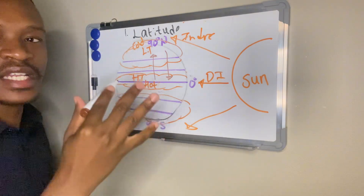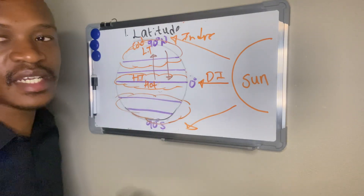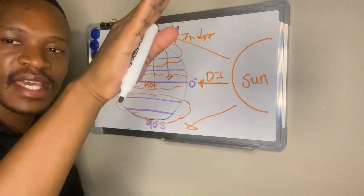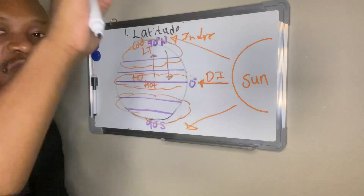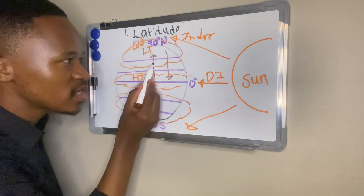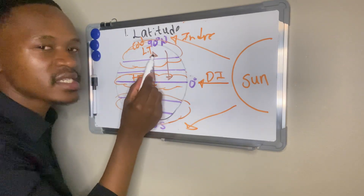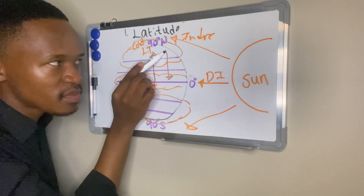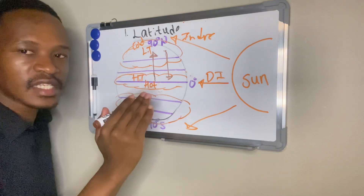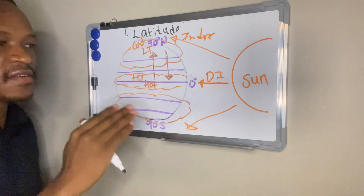This is how latitude affects temperature. At the zero-degree line of latitude, the equator receives direct insolation, hence it is hot. At the poles, insolation is indirect and covers a wider surface area, hence it is cold with low temperatures. As you move from the equator towards the poles, temperatures decrease. Moving from the poles towards the equator, temperatures increase because you receive direct insolation.